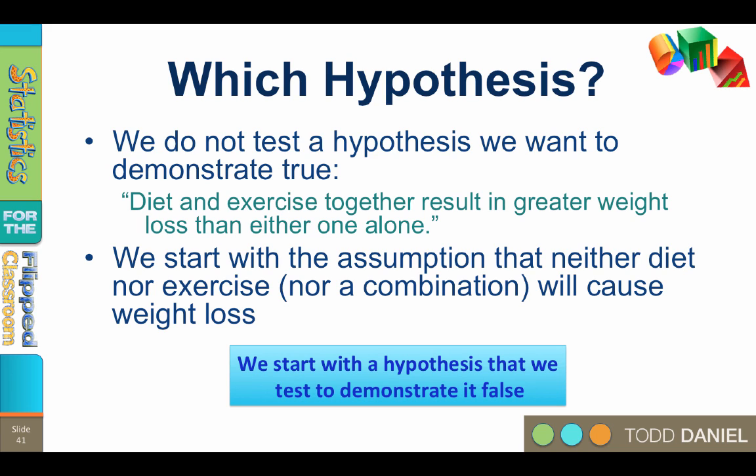When we use theories for hypothesis testing, which hypothesis do we test? You would think that researchers would begin their research by searching for something that they wanted to demonstrate true — something like, diet and exercise together result in greater weight loss than either one alone. And while it is true that we have such experimental hypotheses in mind, the hypothesis that we actually test is the hypothesis that says there is no difference. We always start with the assumption that neither drug works better than the other, or neither diet nor exercise nor a combination will cause weight loss. We start with these because these statements are falsifiable.